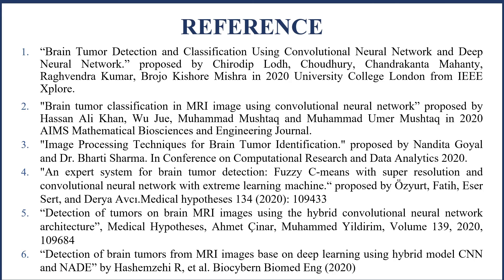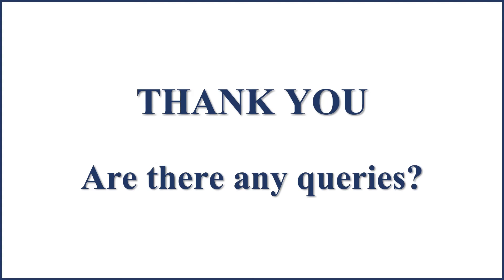These are some of the reference papers that were read to understand the problem of detecting malignant cell growth in the brain. All 6 papers mentioned here were published in the year 2020. I would like to thank all the co-authors of the work for their contributions. Thank you all.